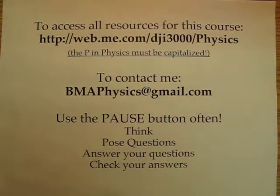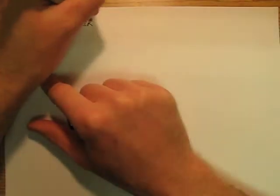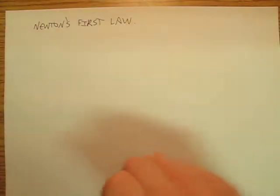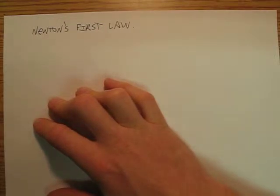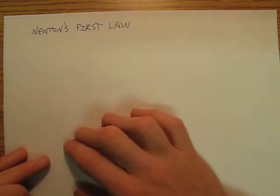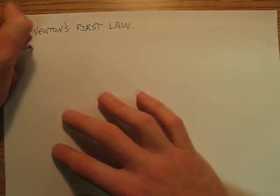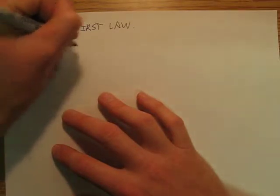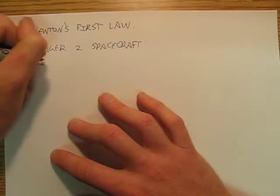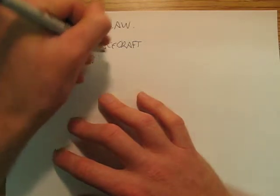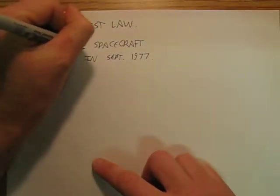I'm back with the second lecture in Chapter 4, and as promised we're going to be talking about Newton's First Law. What I'm going to use as an example — and this is a preview — is going to use a lot of physics not particularly in this chapter but preview a lot of stuff we're going to study in later chapters. I want to talk for these ten minutes about the Voyager 1 spacecraft, which was launched in September 1977.